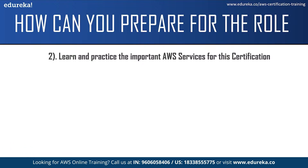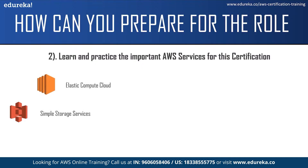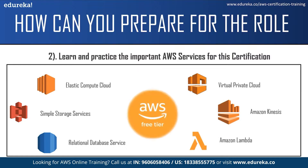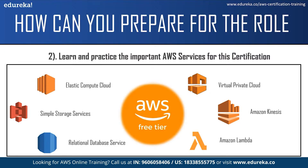Some of the important AWS services to practice are Elastic Compute Cloud, Simple Storage Service, Relational Database Service, Virtual Private Cloud, Amazon Kinesis, and Amazon Lambda. You can practice some of these services using an AWS Free Tier Account. AWS Free Tier Account allows you to access over 85 AWS services for free — just submit the required information and you can start practicing 85-plus services at no cost.